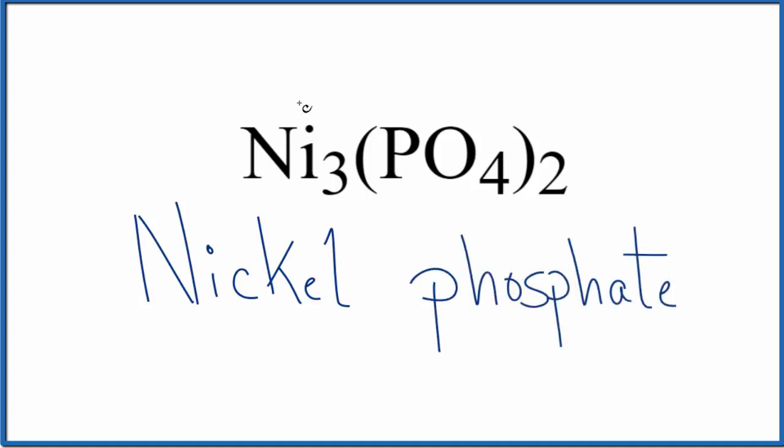And then because we have this transition metal, we need to think about the charge on nickel. So phosphate, the whole thing here is three minus. And we have two of them, two times three minus, that gives us six minus. For nickel, we need to have a six plus to balance that out, to have a net charge of zero. So three times the two plus, that would give us six plus, that would balance everything out.